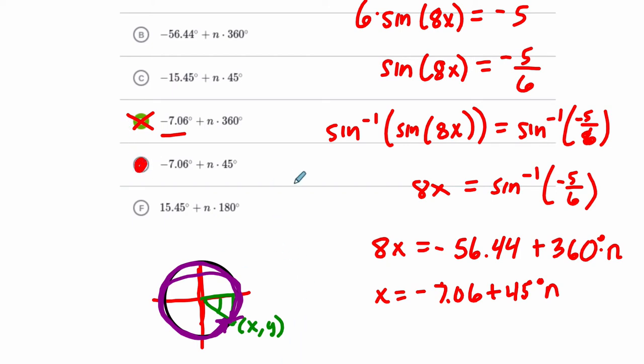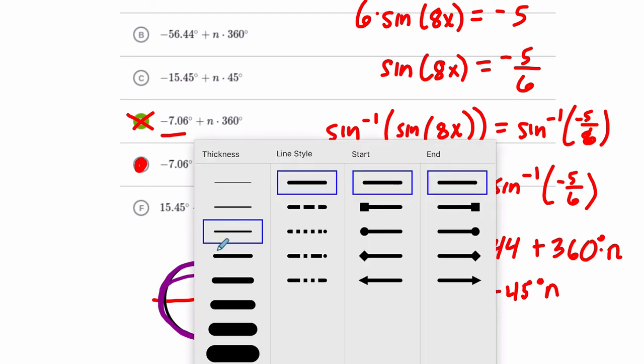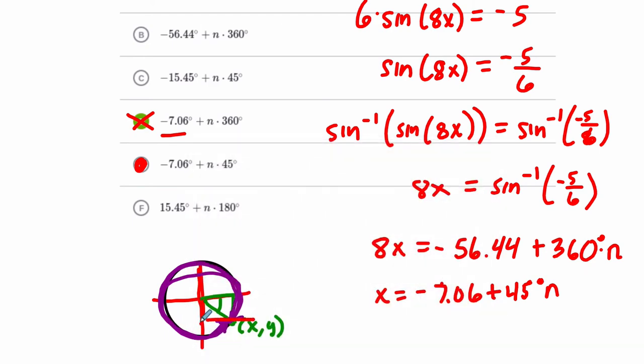We're basically there, except remember that the way sine and cosine work, sine refers to the height. Sine refers to the height of a point, right? So, if I draw this line right here, this point has a certain height, with a certain sine value, but so does this one over here. These two points have the same heights, and therefore, the same sines.